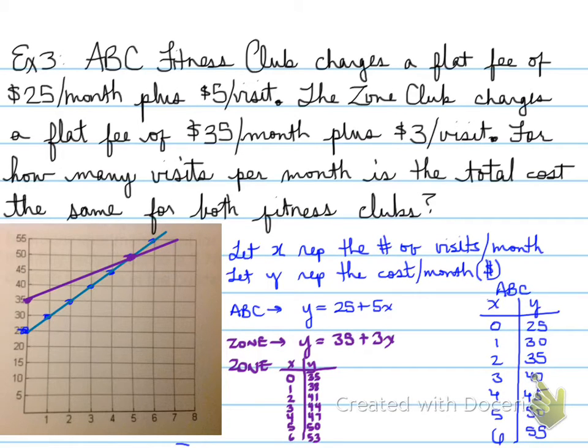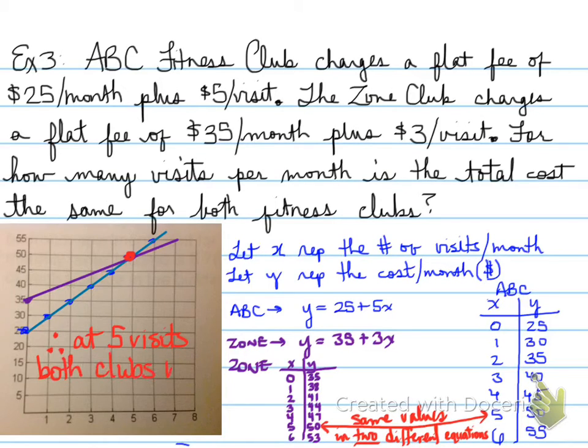Well, how does that help us? Well, if we look at the value for five, we'll notice that both of these values are the same. So, therefore, since they're both the same, we can make a conclusion. This is our point of intersection, so at five visits, both clubs will cost the same.